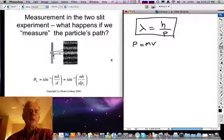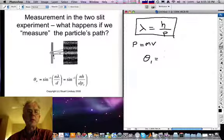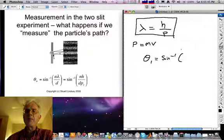So if we plug de Broglie's formula into this expression, we see then that the angle for the first maximum, so let's write it down over here, take the first maximum, n equals 1, is going to be given by the inverse sine of h over d p.